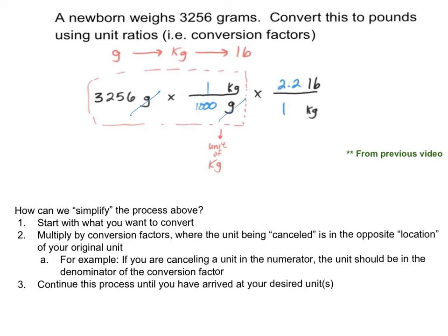So here we would cancel out grams and be in kilograms. Then if we multiply by 2.2 over 1, kilograms would cancel and we'd be left with pounds. It really focuses on the units. Let's look at an example on the next slide.